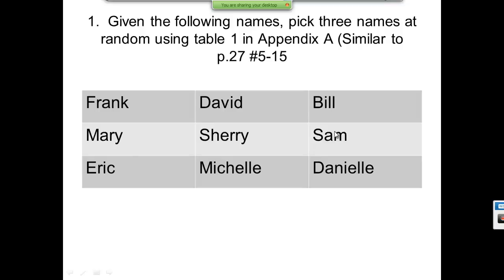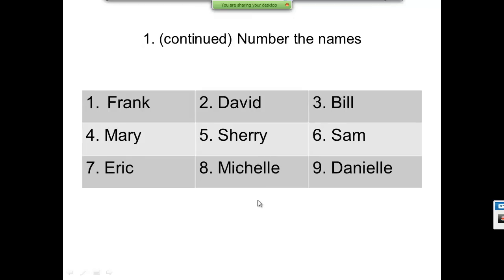Let's look at an example. There's not a whole lot in this section — they just talk about random numbers and using a table. I have these names: Frank, David, Bill, Mary, Sherry, Sam, Eric, Michelle, and Danielle. The task is to pick three names at random using table one, without replacement. The first thing I want to do is number these names.